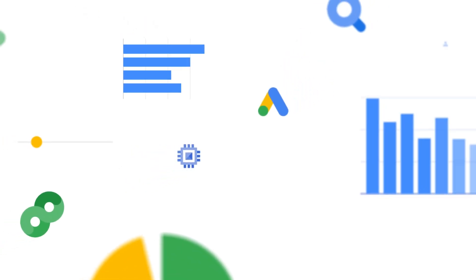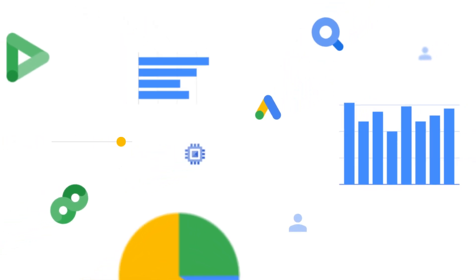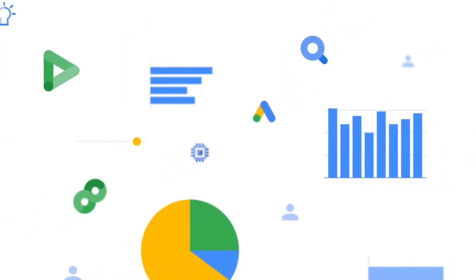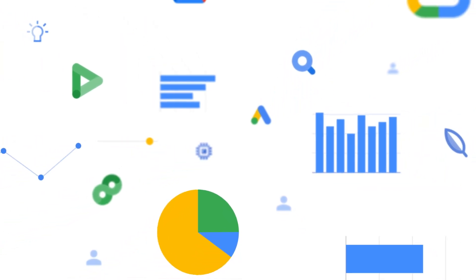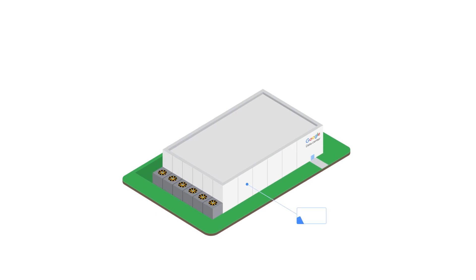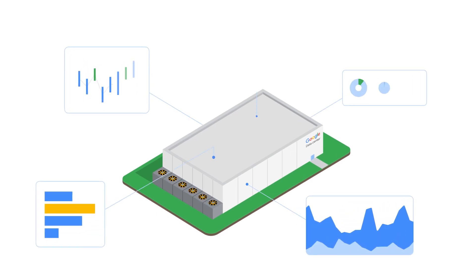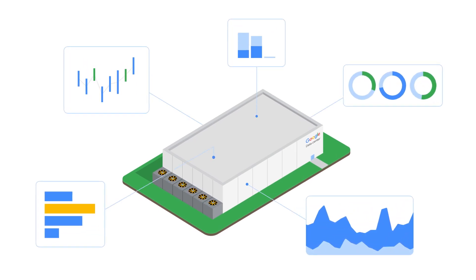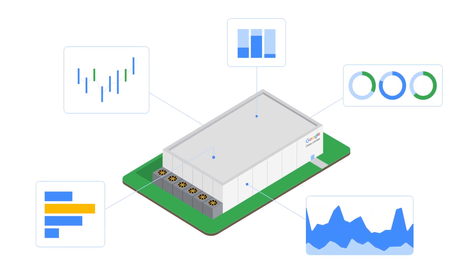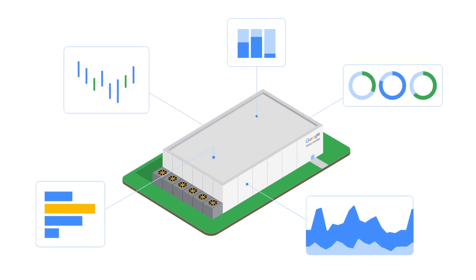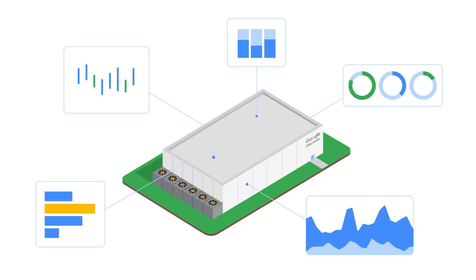How does Google create precise, tailored carbon reporting for its advertising customers? Google's Ads Carbon Reporting builds its calculations from bottom to top, taking advantage of machine-level power and activity monitoring inside Google's data centers.